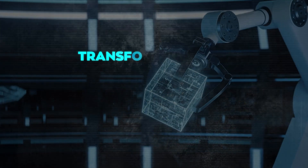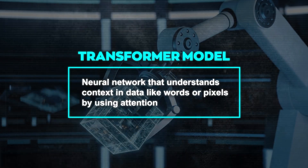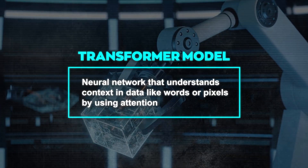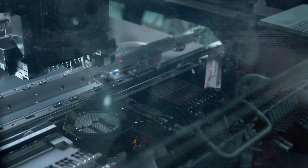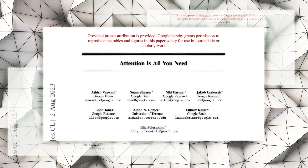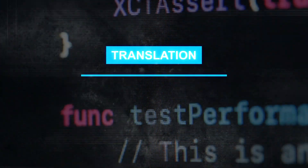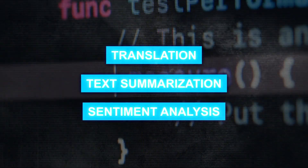So first, what's a transformer model? It's a neural network that understands context in data like words or pixels by using attention. This lets it focus on important parts and process long sequences better than older models like RNNs or CNNs. Google introduced transformers in 2017 with their paper 'Attention is All You Need.' Now they're widely used in language tasks like translation, text summarization, and sentiment analysis.